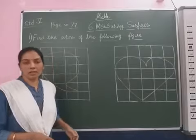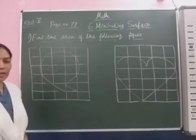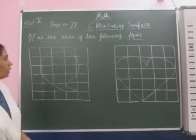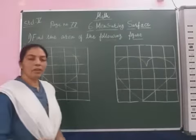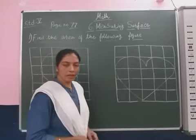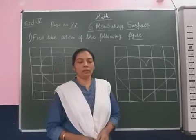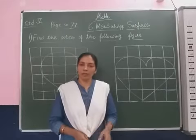Students, I take this question from your textbook page number 77. Find the area of the following figures. Different figures are given on the grid and we have to find out the area of the different shapes.